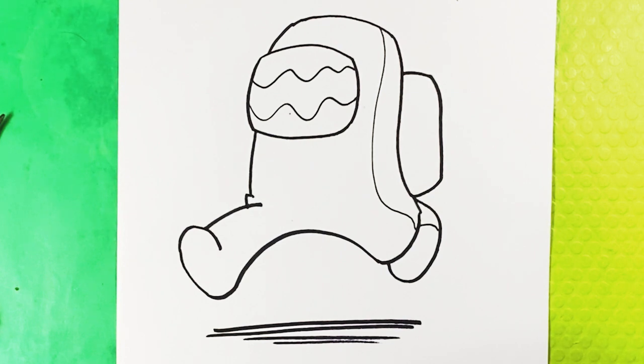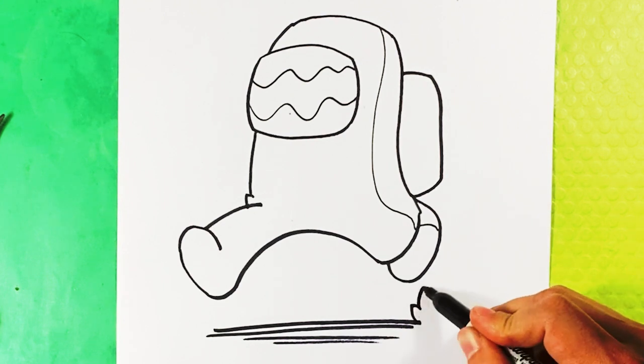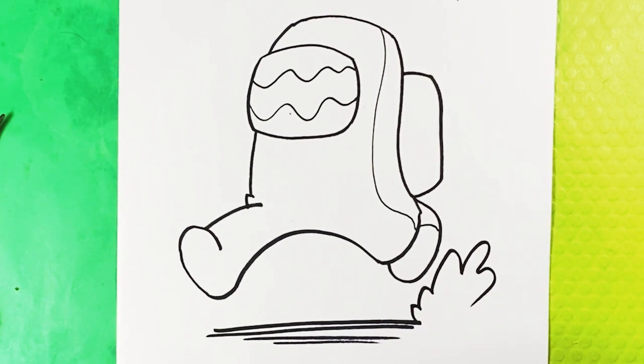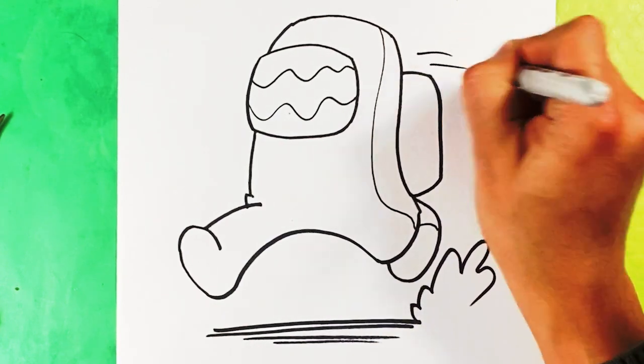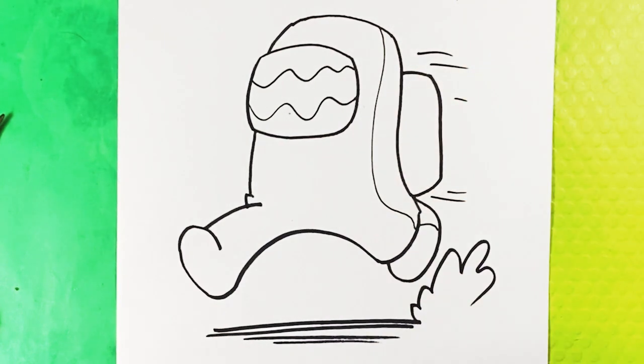Then maybe draw a dust cloud right there, and you can draw lines over here for a very simplified run effect. That's it! Thank you so much. Hopefully, that was easy enough.